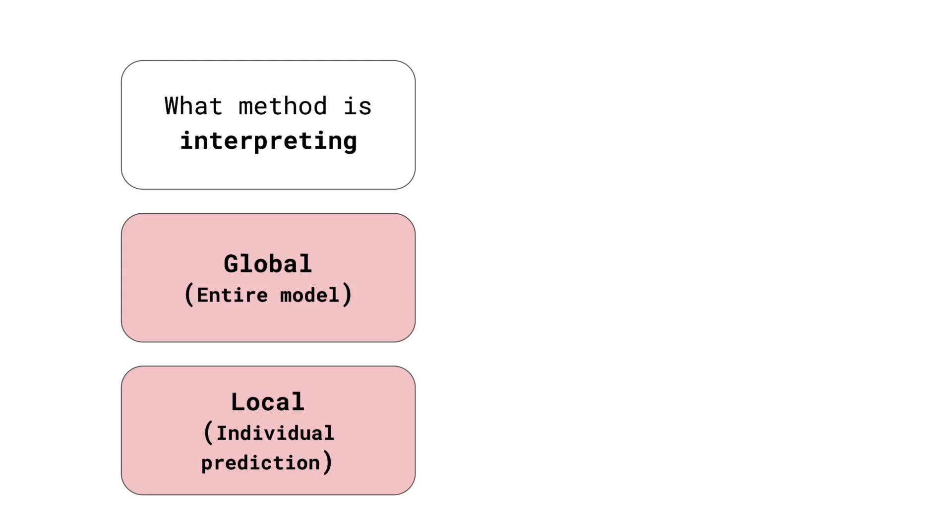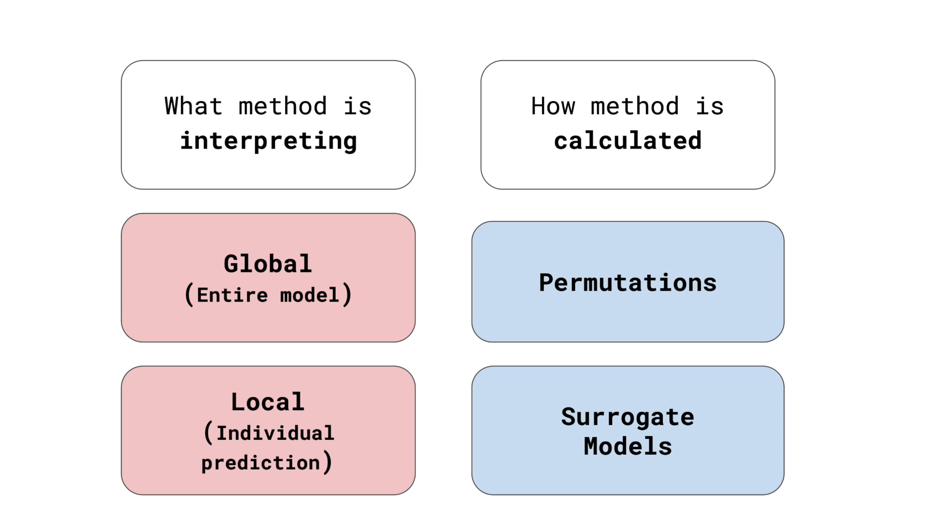In this video, we will elaborate on this definition. We will also discuss the different classifications of model agnostic methods for interpretability. These are global versus local interpretations and permutations versus surrogate models. We end by discussing the limitations of model agnostic methods and their benefits over other approaches to interpretability.